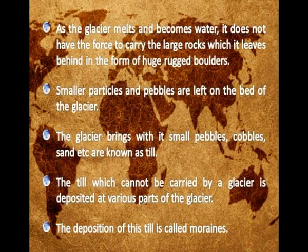As the glacier melts and becomes water, it does not have the force to carry the large rocks, which it leaves behind as rugged boulders. Smaller particles, pebbles, cobbles, and sand left on the bed of the glacier are known as till. The till which cannot be carried by a glacier is deposited at various parts of the glacier, and this deposition of till is called moraines.